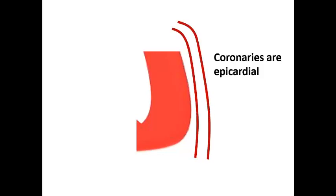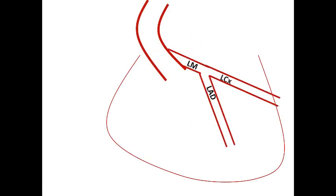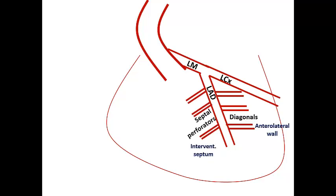Coronaries are epicardial, running on the epicardial surface of the heart, then branching to supply the heart from epicardial towards the endocardial surface. This explains that the subendocardial region is the farthest point from coronary perfusion and therefore most liable to infarction. The left main coronary artery bifurcates into the left anterior descending (LAD) and left circumflex (LCX). The LAD runs on the anterior interventricular groove, the LCX on the left AV groove. The LAD gives origin to diagonal branches supplying the anterolateral wall and septal perforators supplying the anterior two-thirds of the septum including the conductive system.